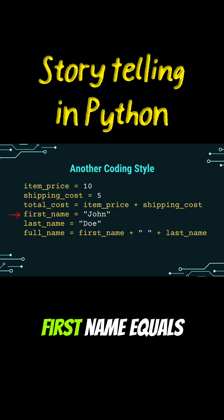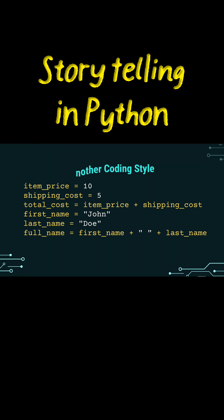The same goes for the names. first_name equals John and last_name equals Do are infinitely clearer than a1 and a2.